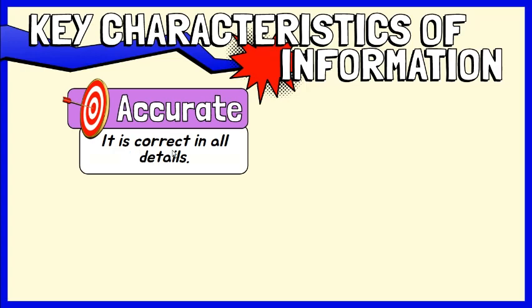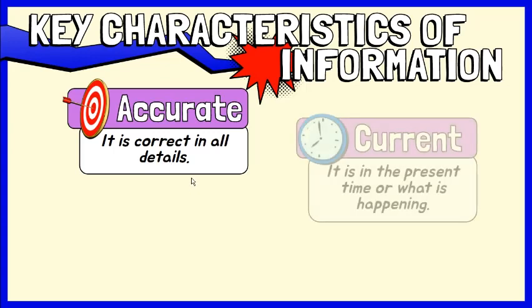Accurate. As much as possible, information should be free from errors. Is correct in all details. Accurate information is usually a result of accurate data collection. More time should be allocated to collect and check data for a greater accuracy rate.